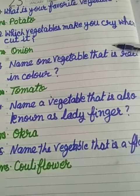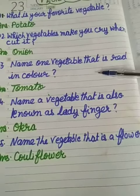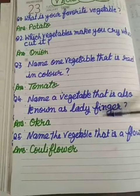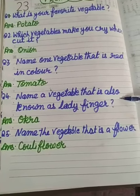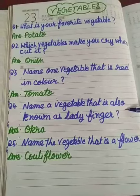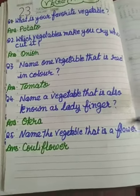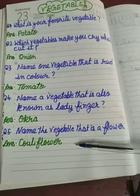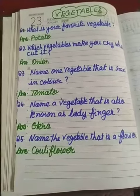Name one vegetable that is red in color. Tomato. Name a vegetable that is also known as ladyfinger. Okra. Name the vegetable that is a cauliflower. Cauliflower.